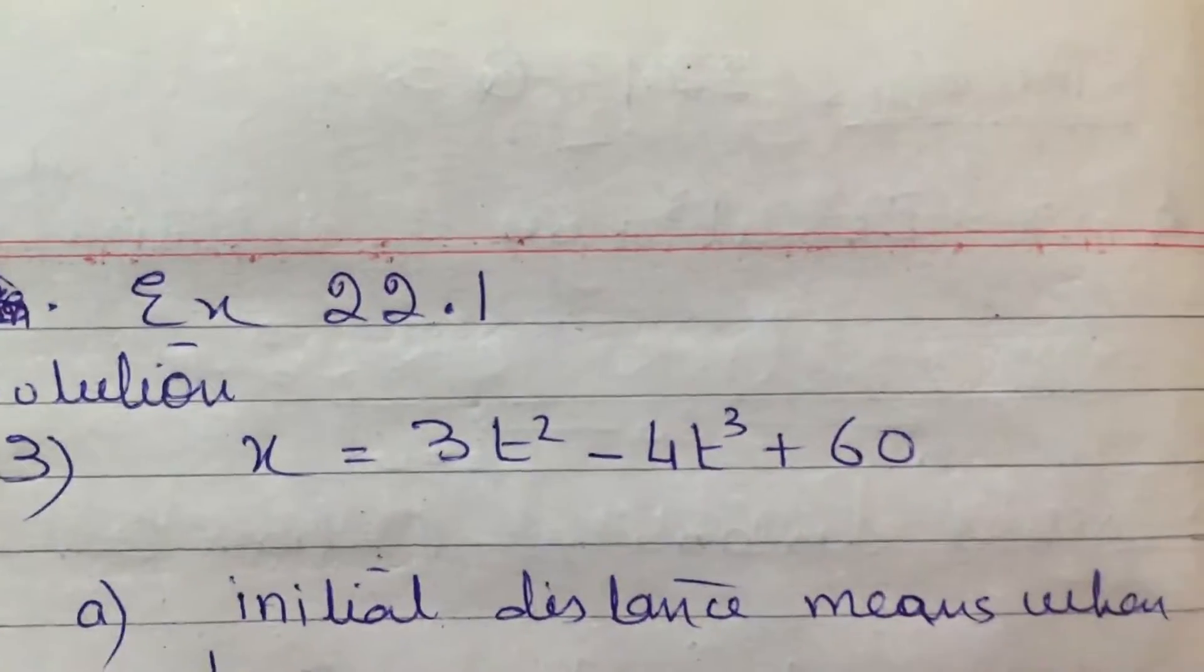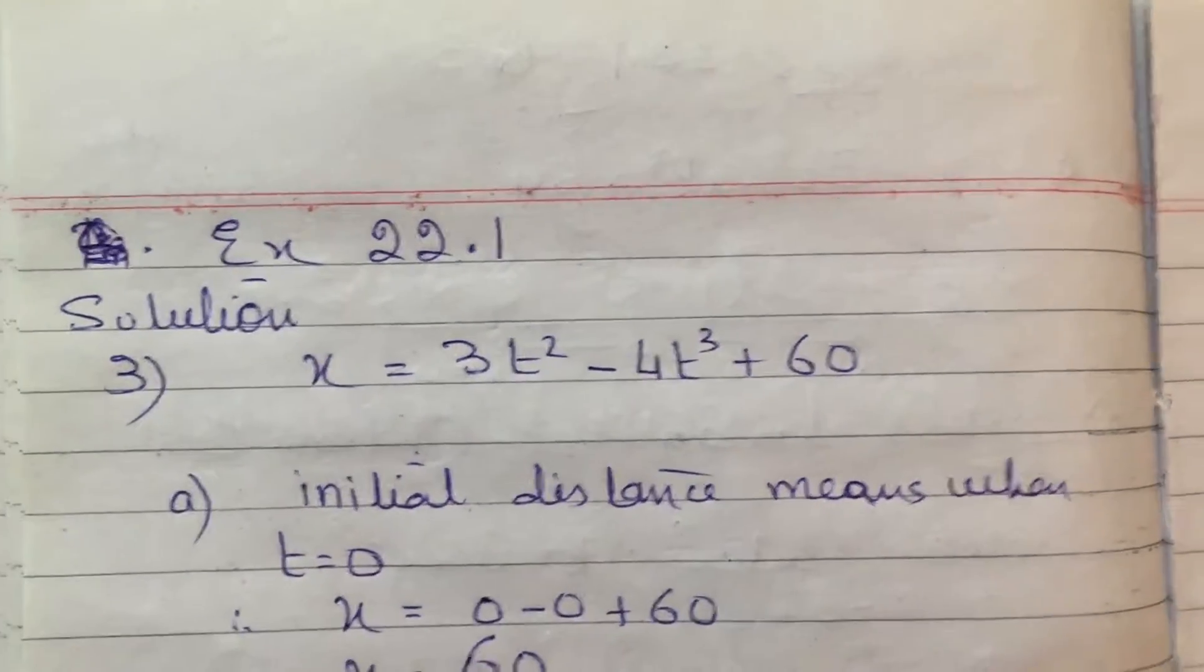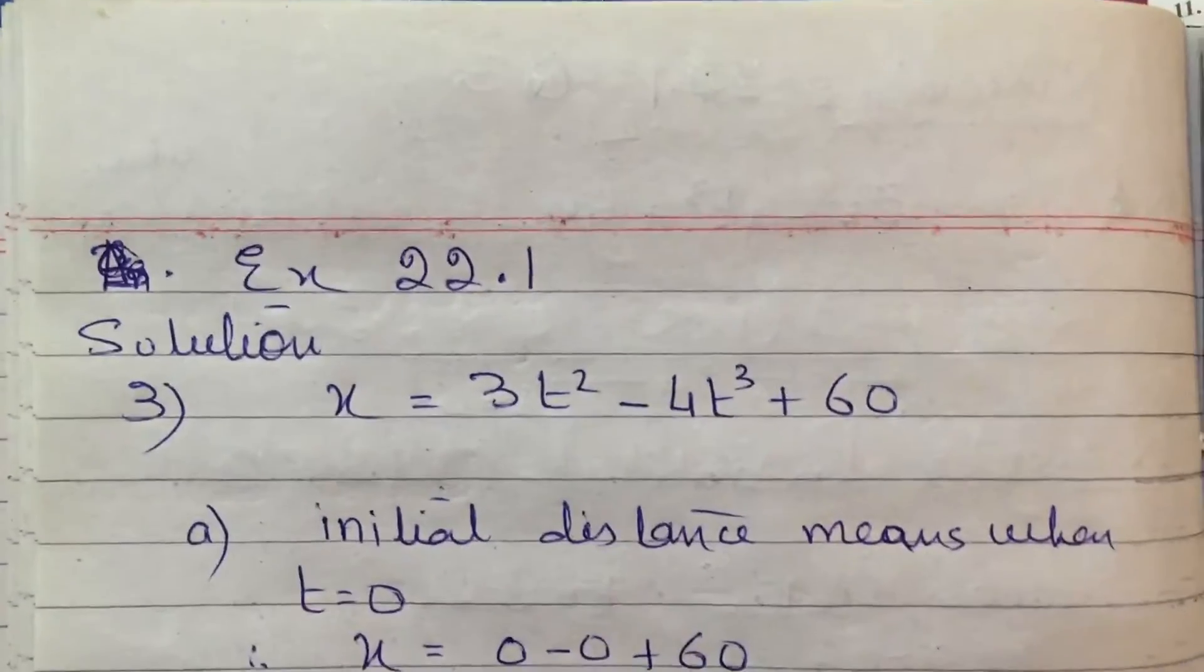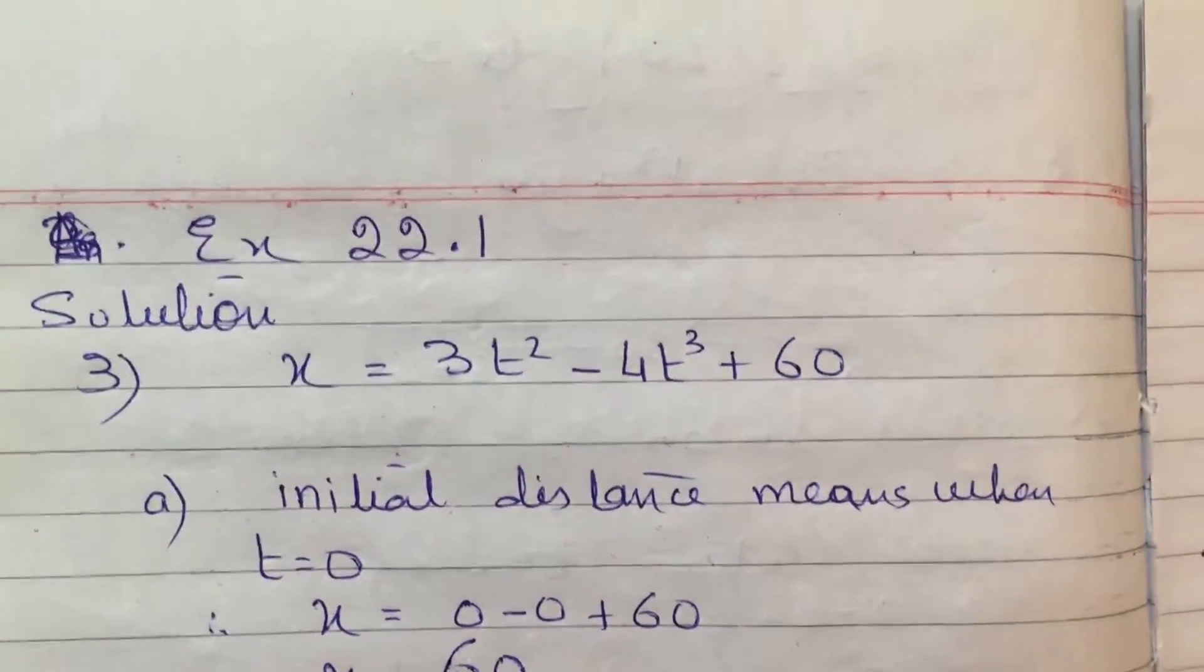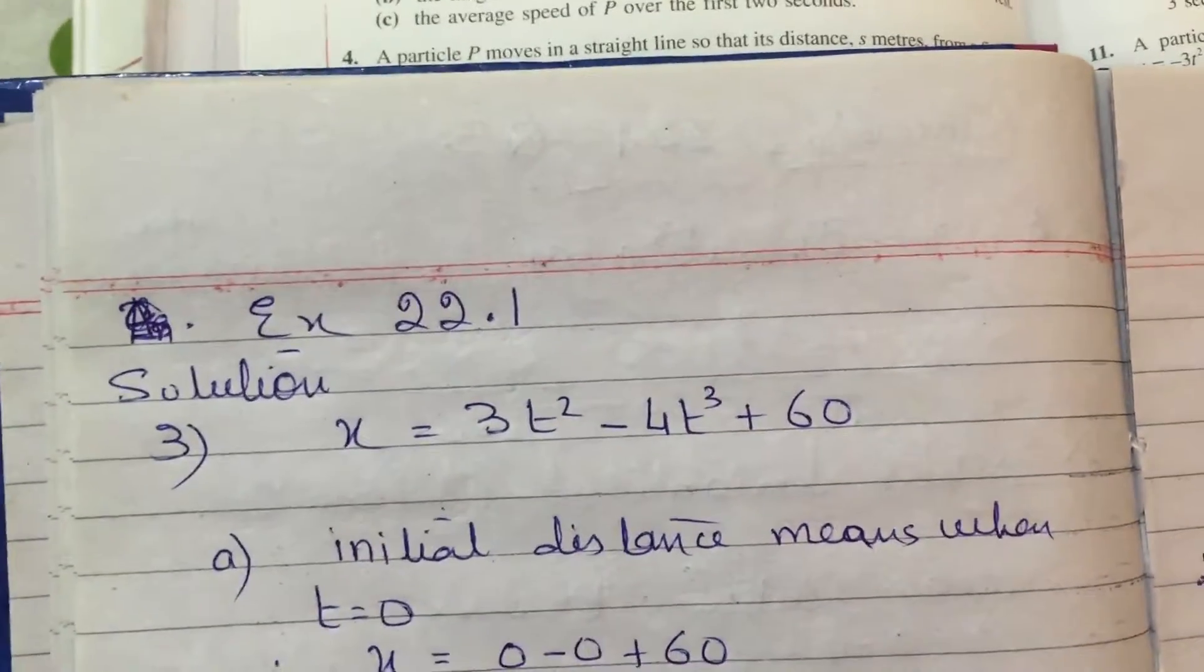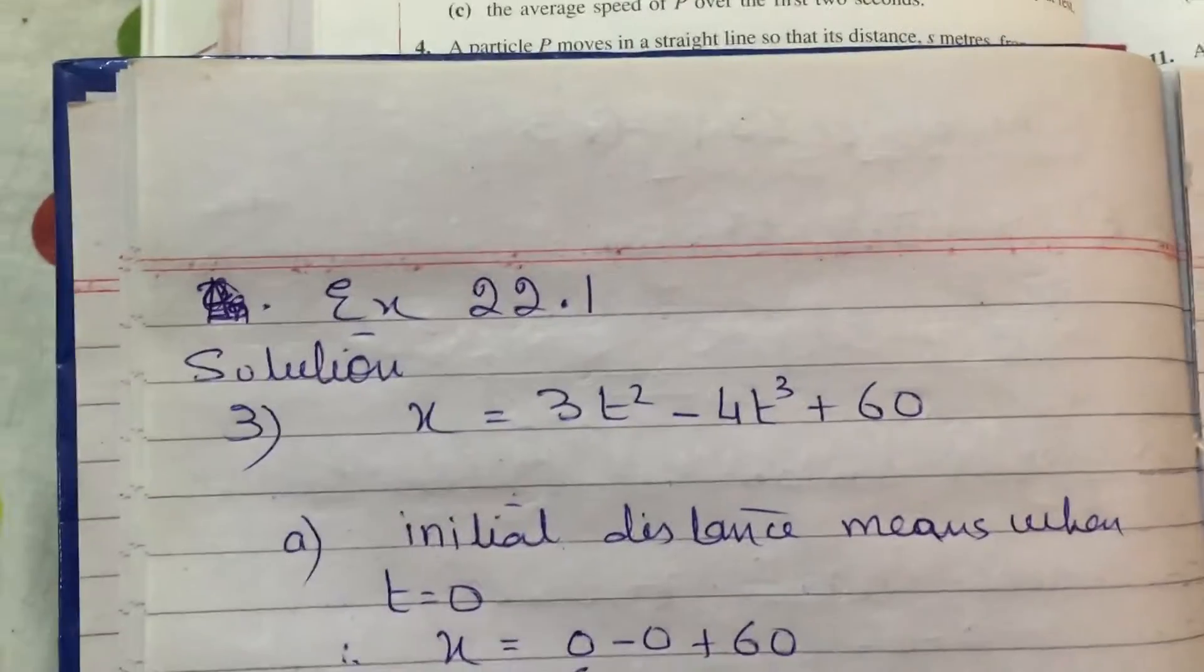Now in this question the displacement equation is given to you, and the first part of the question is saying find out the initial distance. Initial distance means when time starts, which means t equals 0.